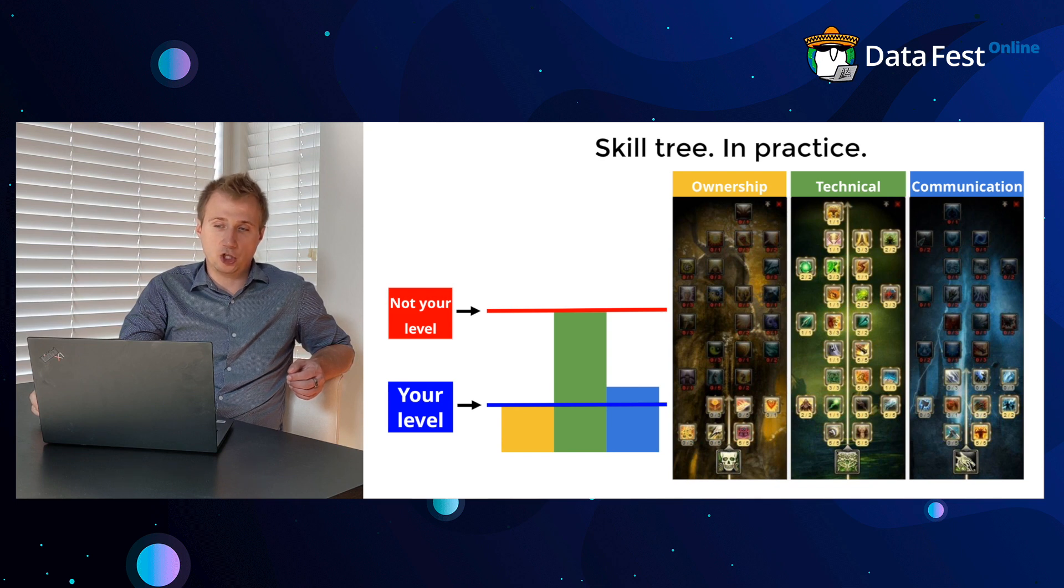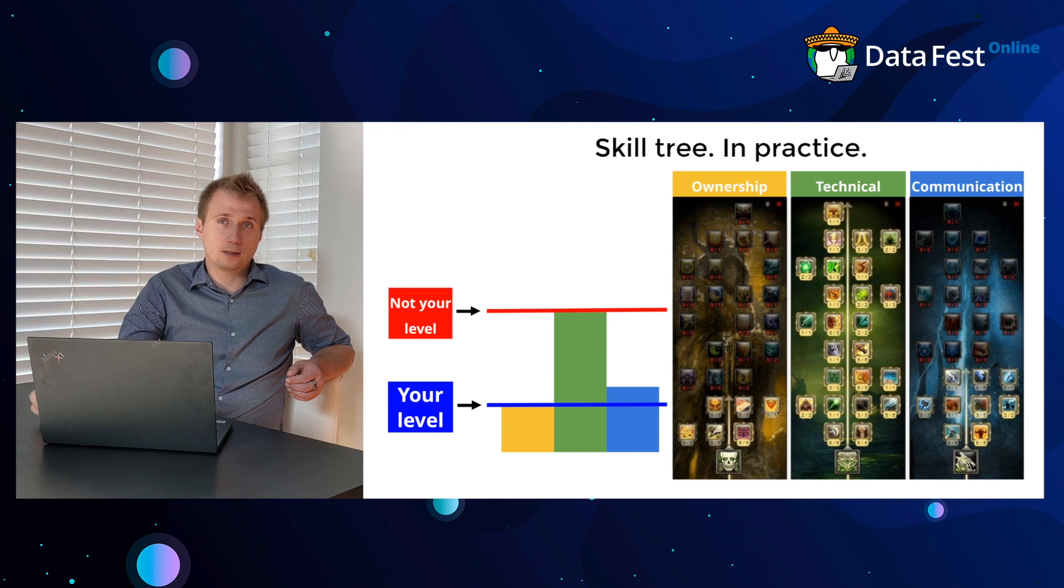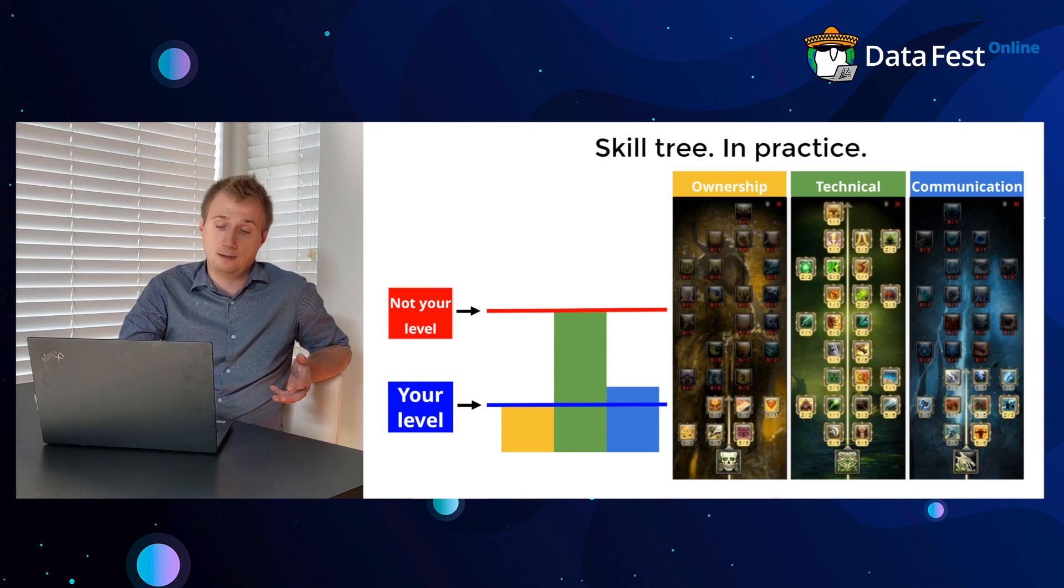Technical, ownership, and communication. Technical is straightforward—how good you are in different technical things. For ownership, as a junior you work on the task level, as a middle on the feature level, as a senior on the project level, and as a staff on cross-team, cross-functional projects.